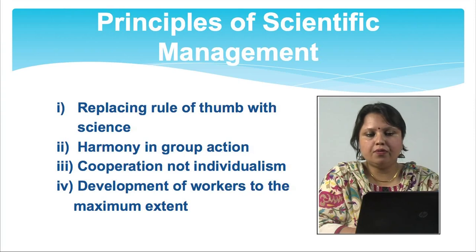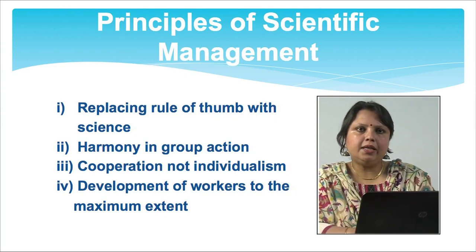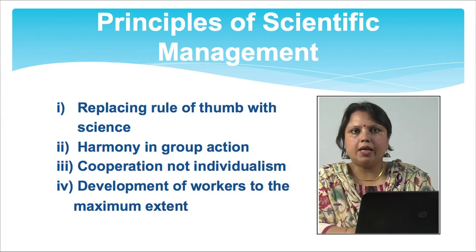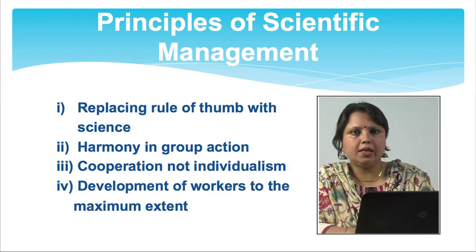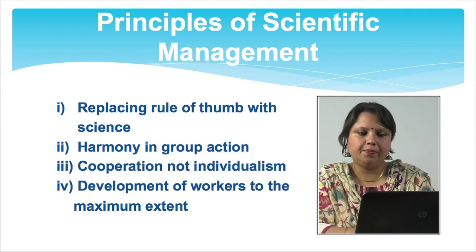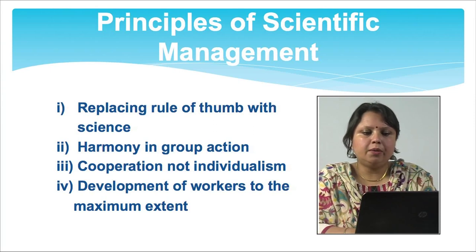Under the principles of scientific management, Taylor stated: first, there should be replacement of rule of thumb with science — we should analyze the scientific reason for doing such work rather than just doing it because it has always been done that way. Second, there should be harmony in group actions — harmony between employees and employers so there is no conflict and people can work for better productivity. Third, there should be cooperation and not individualism — people should be more goal-oriented for the organization. Fourth, development of workers to the maximum extent through properly arranging their activities.